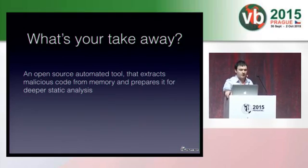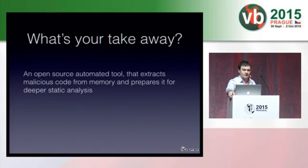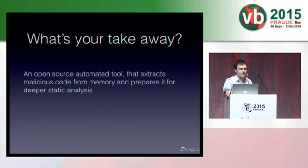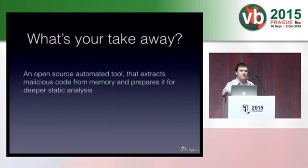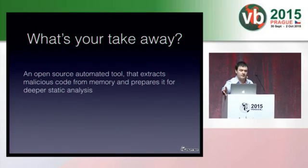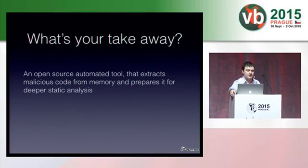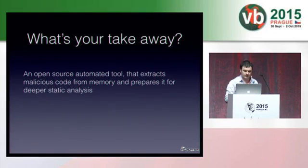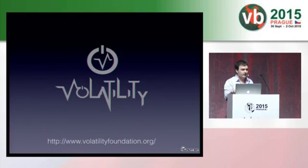As part of the work as a malware researcher, there are a lot of repetitive tasks, like finding the malicious code from memory, dumping it, fixing its header, trying to identify the malware, and only then really getting to analyze the malware sample. This project is meant to ease the process and make it as automated as possible. The project leverages the Volatility Framework in order to do its code extraction.